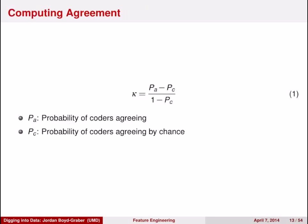The statistic often used is called kappa — the Greek letter that looks like a K. What you do is compute the probability of coders agreeing and then subtract off the probability of coders agreeing by chance. Let's see what this is in an example.